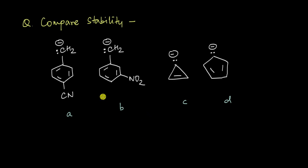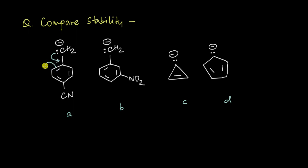Now, instead of a cation, we have different anions, and you need to compare the stability of these anions. Why don't you pause the video and try to find out the correct order? Well, out here I have a carbanion — I have this lone pair on a carbon atom that can get stabilized via resonance.